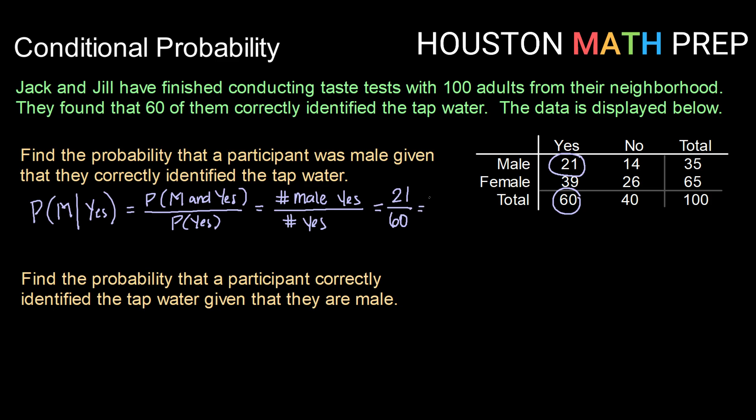So reducing that, that would be 7 over 20, or if we wanted a decimal approximation for that, that would be 0.35, or about 35 percent is the probability that a participant was male given that they correctly identified the tap water.